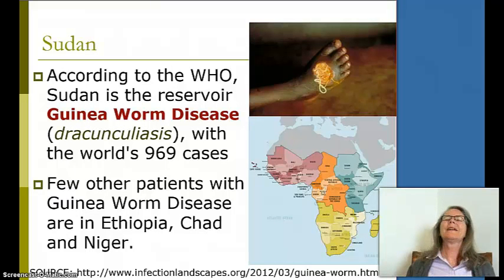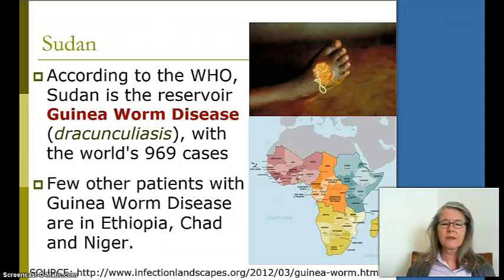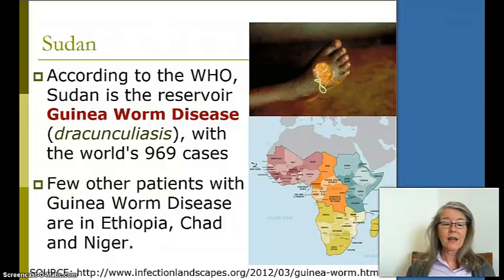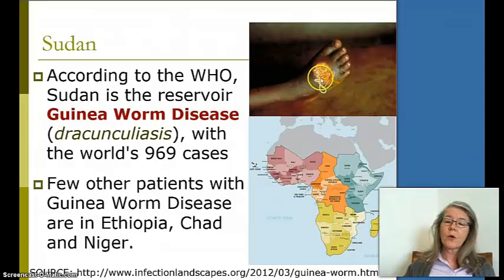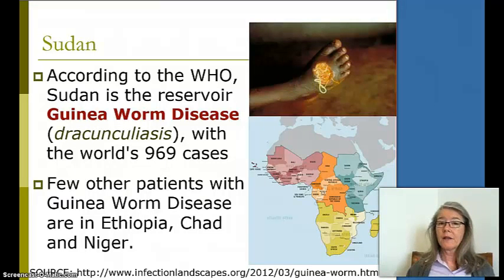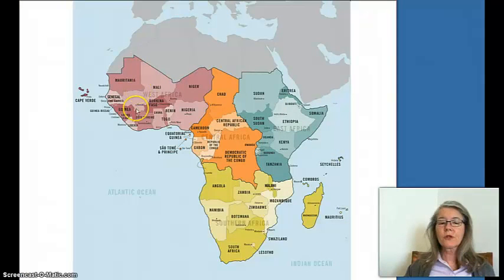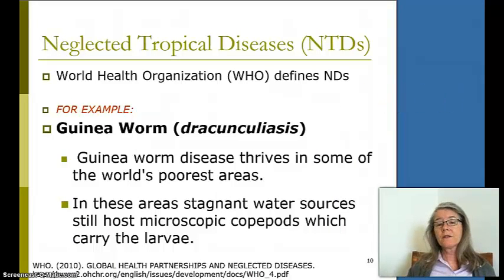Let's talk about guinea worm — it is one of the weirdest infections I have ever seen. According to the WHO, Sudan is a reservoir for guinea worm disease, properly called dracunculiasis, with fewer than a thousand cases worldwide. A few other cases are in Ethiopia, Chad, and Niger. You can see the adult worm causing a large ulcer on this child's foot — the adult worm comes out, and that's how they lay their larvae and eggs. The cycle involves stagnant water sources hosting the copepod, which carries the larvae that penetrate the skin.